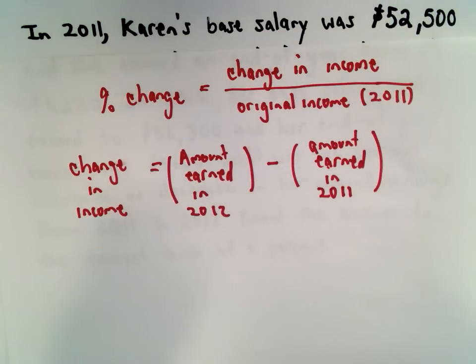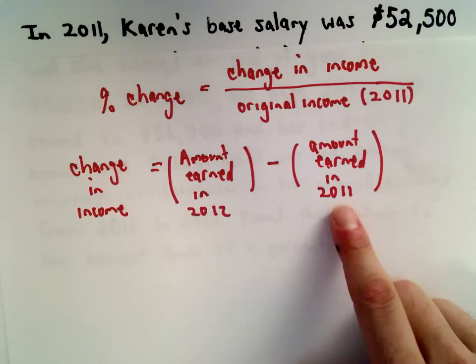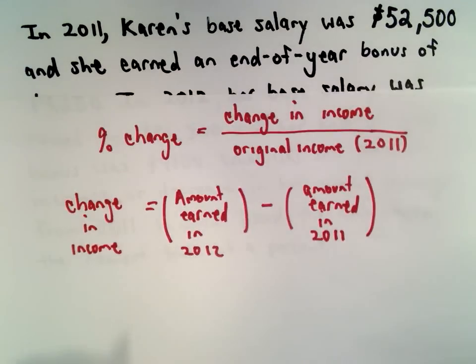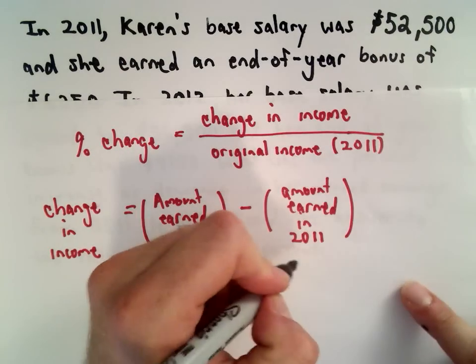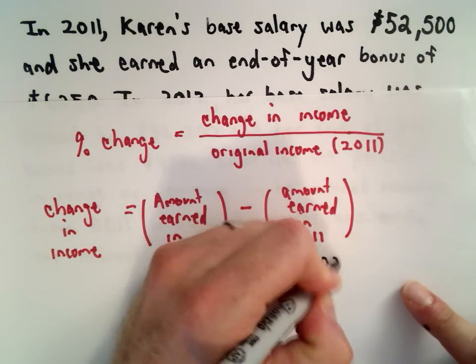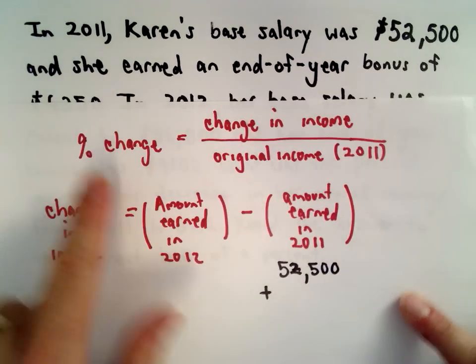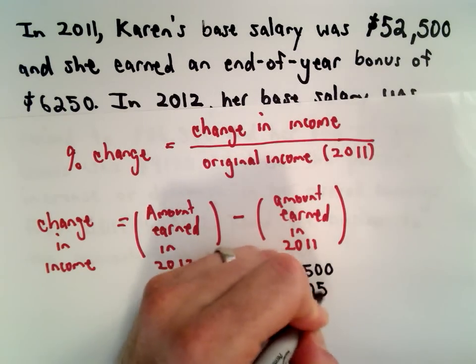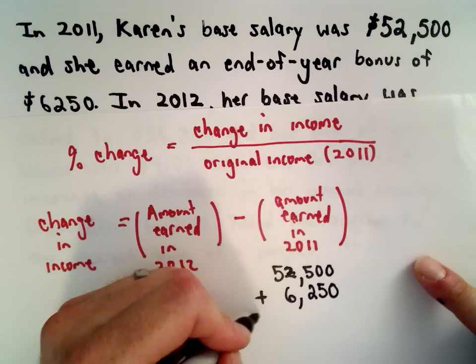Okay, well, to figure out the amount that she earned in 2011 and the amount earned in 2012, that's just going to be a matter of doing addition. So we know in 2011, she earned $52,500, and she also got this nice bonus of $6,250. I wish I got a nice end-of-year bonus like that.